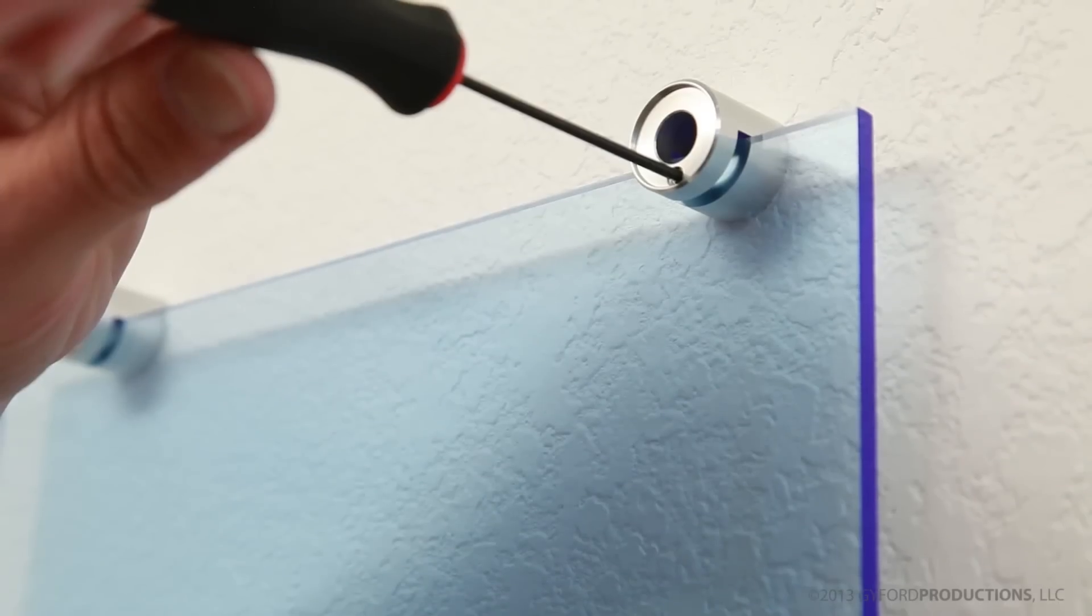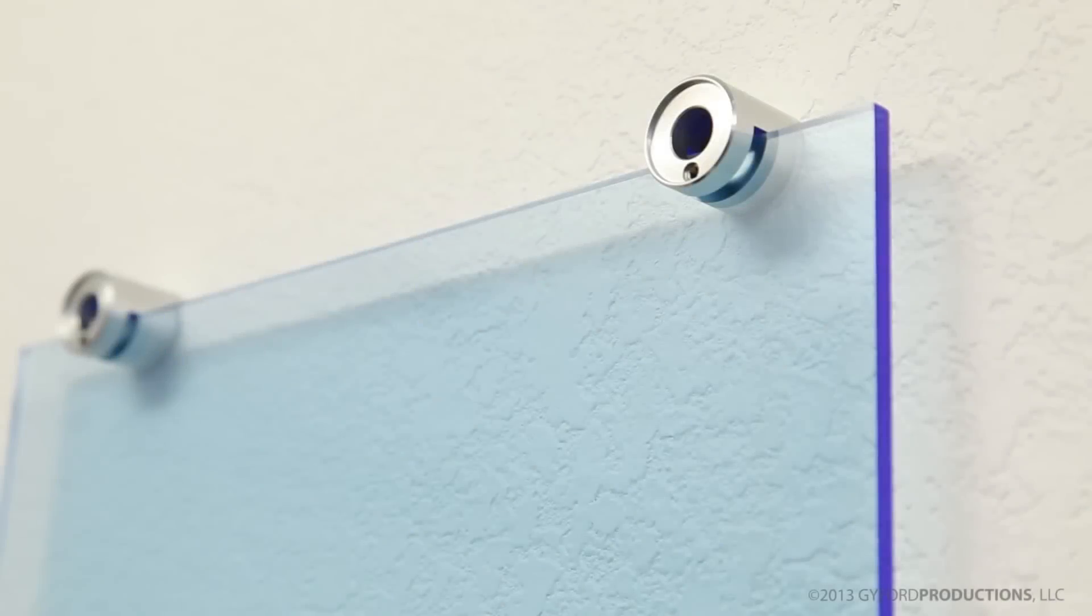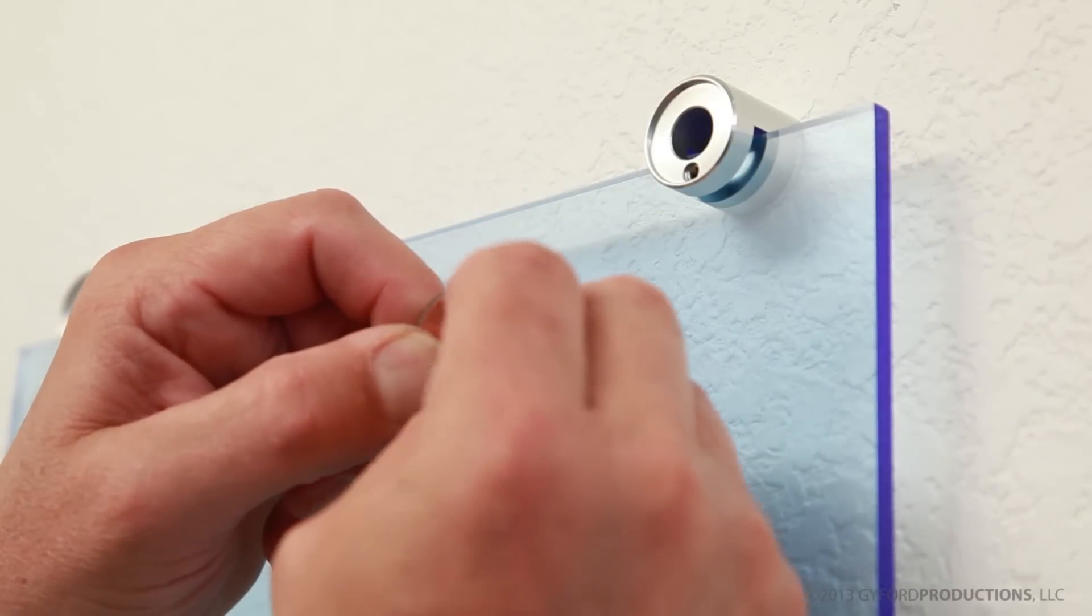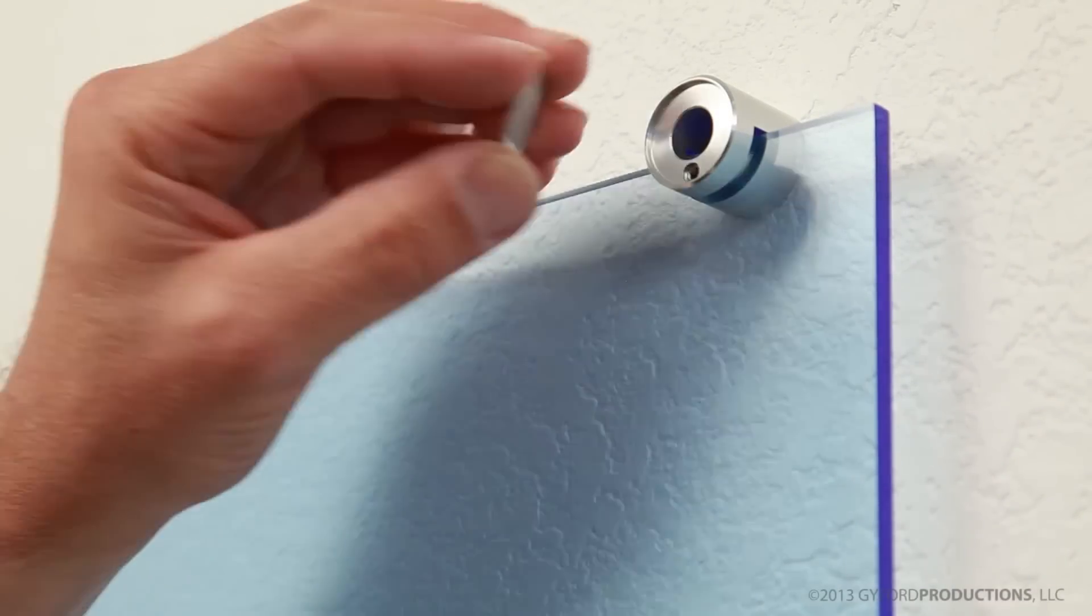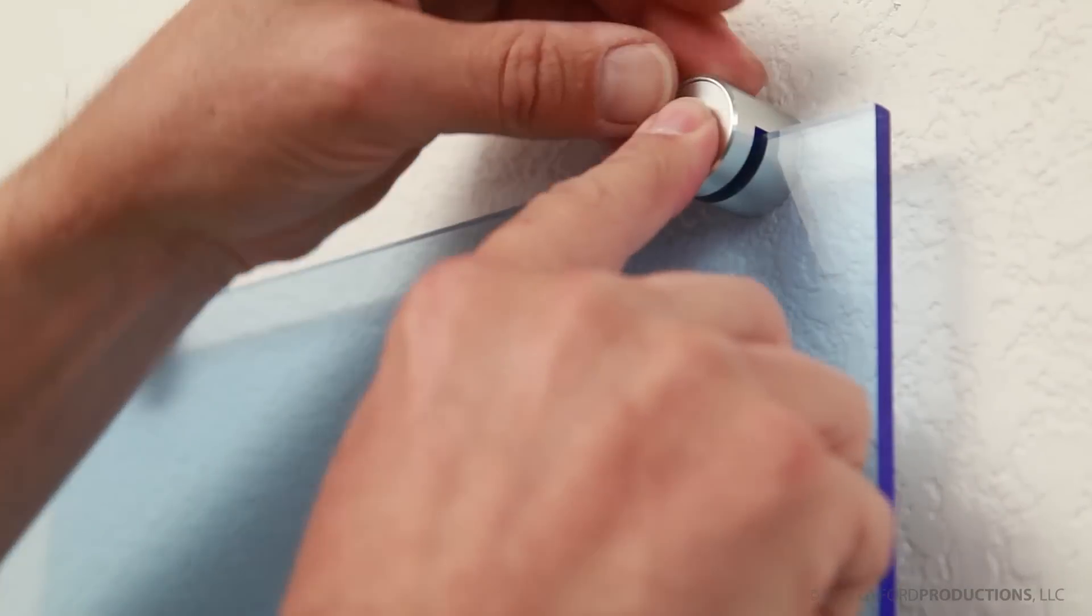When everything is right go ahead and tighten all of your set screws down. This style gripper is finished off with an adhesive cap. Note the cap has brush marks on the face that you may want to line up horizontally.